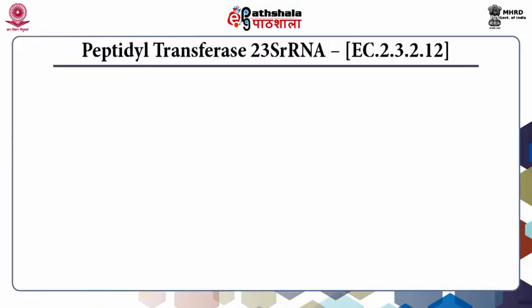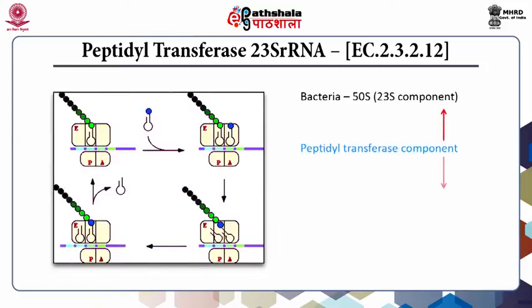Peptidyl transferase 23S RNA: peptidyl transferase is an aminoacyl transferase associated with the formation of peptide bonds between adjacent amino acids during the translational process, and is also the primary enzymatic function of the ribosome. Its activity is only mediated by ribosomal RNA, as proven by site-directed mutational studies. In prokaryotes, the 23S component of the 50S ribosome, and in eukaryotes, the 28S component of the 60S ribosome, performs the peptidyl transferase activity.